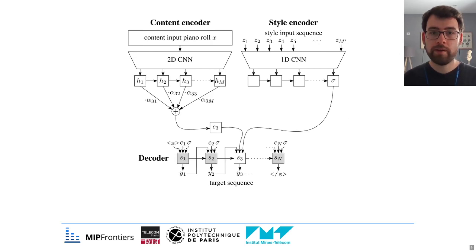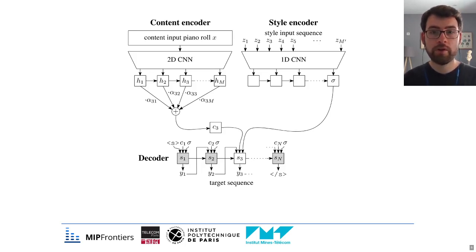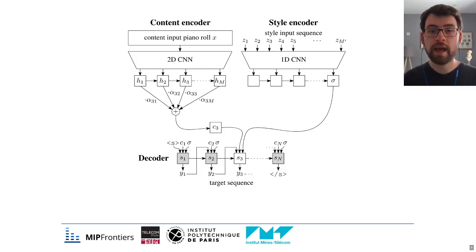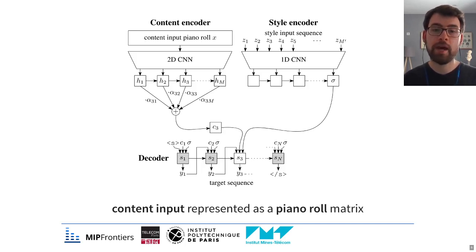Our neural network is an RNN sequence-to-sequence model with attention. Unlike classical sequence-to-sequence models, it has two encoders: one for the content input and one for the style input. While the content encoder computes a sequence of feature vectors H1 through HM, which are then processed using the decoder's attention mechanism, the style encoder outputs a single style embedding vector, sigma. The content input is represented as a piano roll matrix combining all the instruments, similar to what we saw in the previous slide.